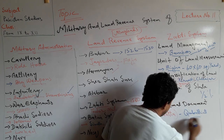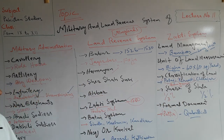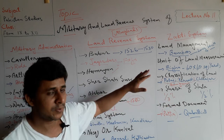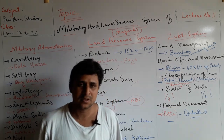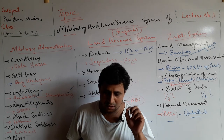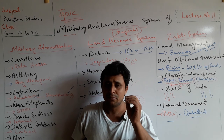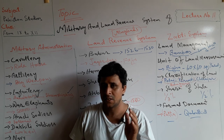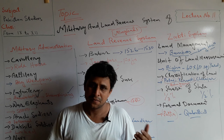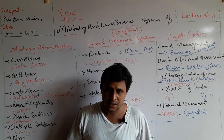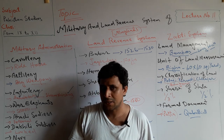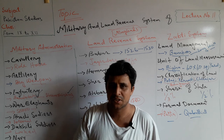In this way we have discussed the military administration and land revenue system of the Mughal Empire, especially the Zabti system, which was the most successful during the Mughal period and served as the major source of income for the state. In the next lecture we will discuss the British and other topics related to Indo-Pakistan history. Thank you very much. Take care. Allah Hafiz.